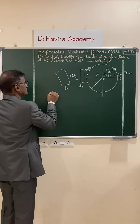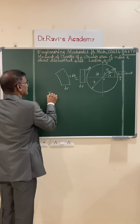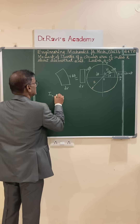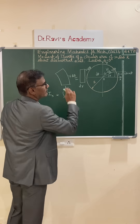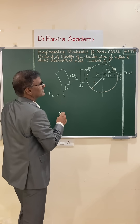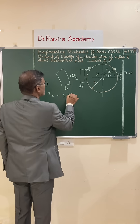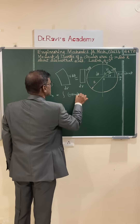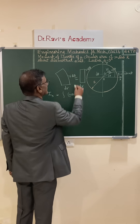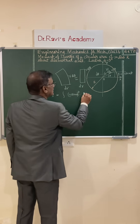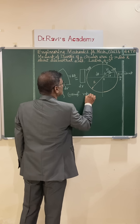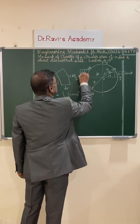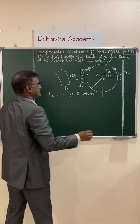Let us write the expression for moment of inertia about the x-axis: it equals the integral of y² dA, where y equals r·sin theta, so y² equals r² sin² theta, and the elemental area dA equals r·dr·d theta.